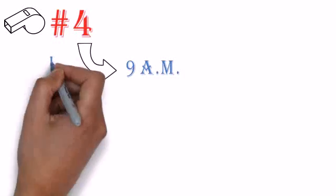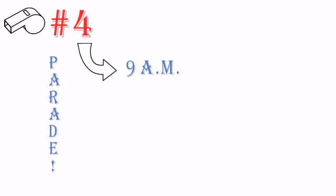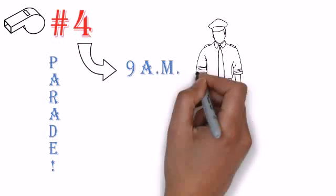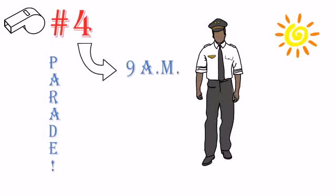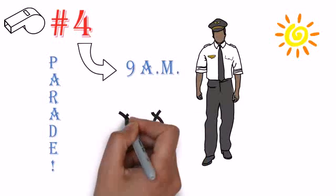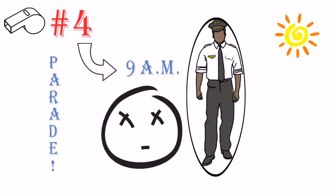Fourth whistle was at 9am for parade. Yes, parade. Wearing white uniforms, we had to march for around half an hour in the hot sun. And I absolutely hated this time. Absolutely hated. The uniforms were very good though.